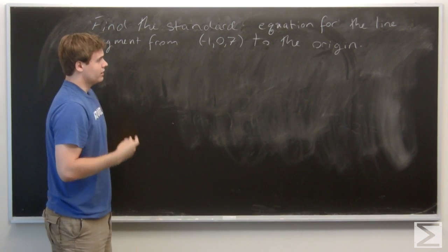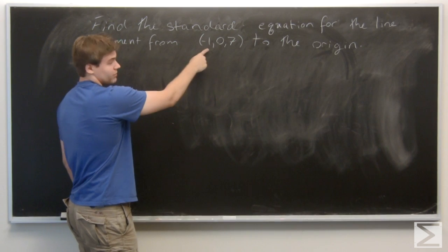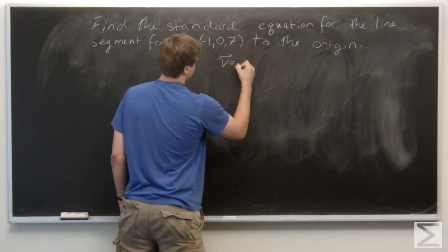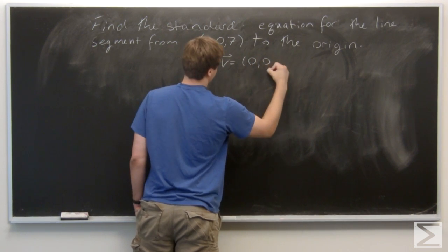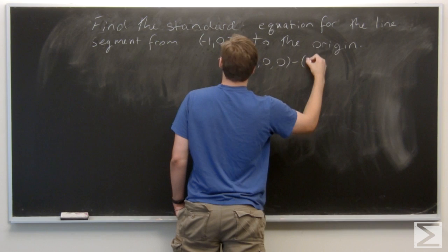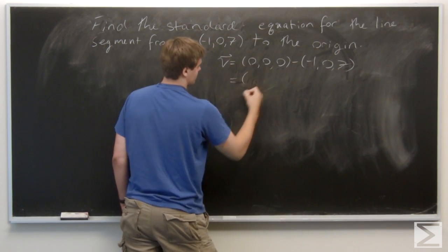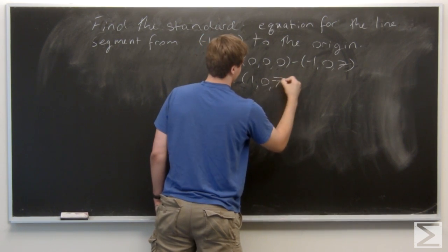And now the vector we want, which is going to be the vector in the direction from this point to the origin, is going to be given by the vector V = (0, 0, 0) - (-1, 0, 7). Well, that's just going to be (1, 0, -7).